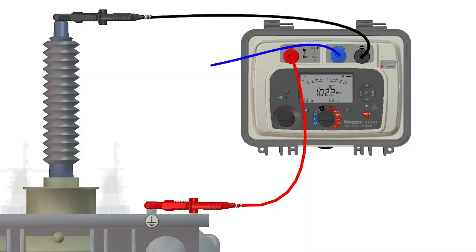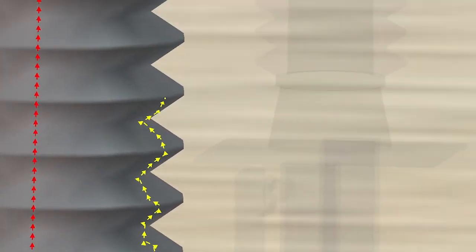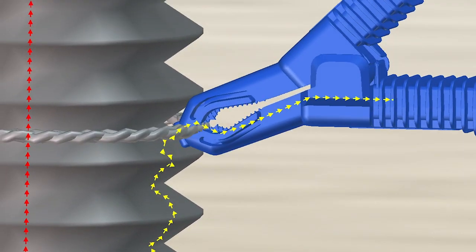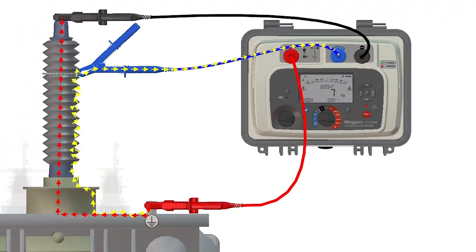When the guard terminal is added, shown here as the blue test lead connected to the asset, the surface leakage current is removed from the test result, providing an accurate measurement of the material's insulation.